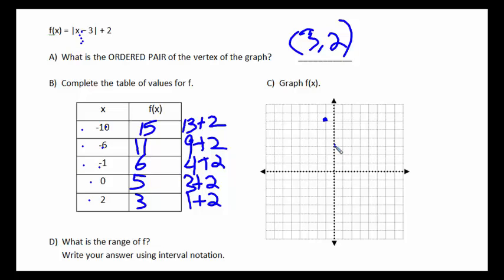0, 5 is next door. 2, 3. And don't forget, we had the vertex we found was 3, 2, so let's plot that.